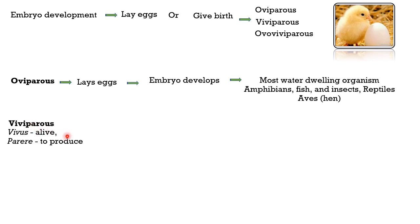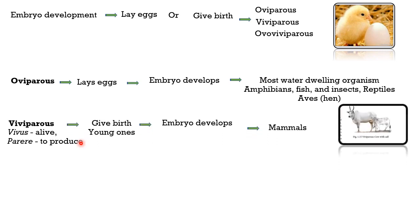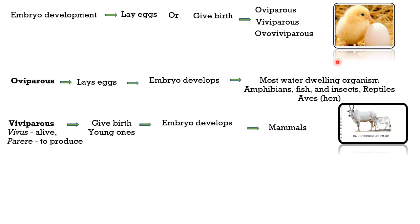Chicks come out of eggs — that is oviparous. Viviparous organisms — 'vivi' means alive — best example is mammals. In viviparous organisms, the young one develops completely inside the parent's body and is given birth alive. Examples include humans, cows, dogs, and cats. When comparing viviparous and oviparous, oviparous animals are more vulnerable because after laying, eggs develop on their own. Viviparous is the safest because fertilization and embryo development take place entirely inside the parent.